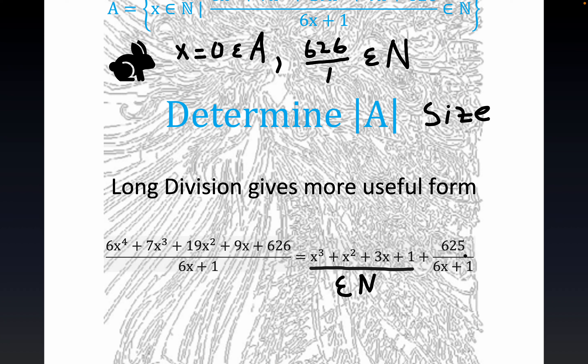Now, the question is, when is this going to be a natural number? It will be a natural number precisely when 6x plus 1 is equal to one of the divisors of 625. And that's very simple. 625 has a known number of divisors and it's easy to find them. So we can equate 6x plus 1 to each of those divisors and see if it works out to be an integer and see if it works out that x is a natural number.